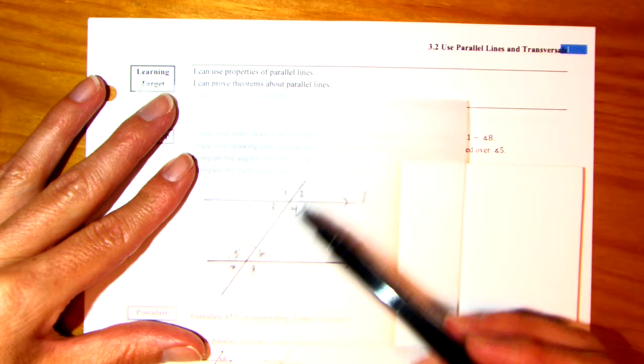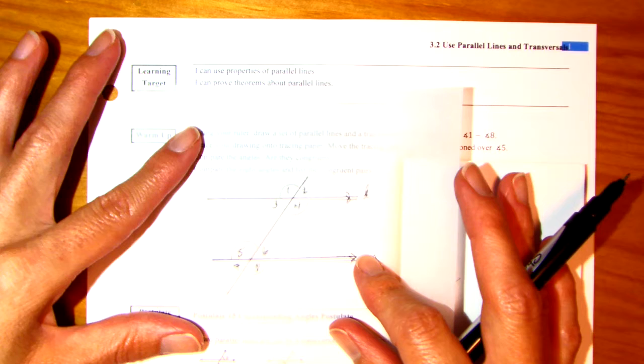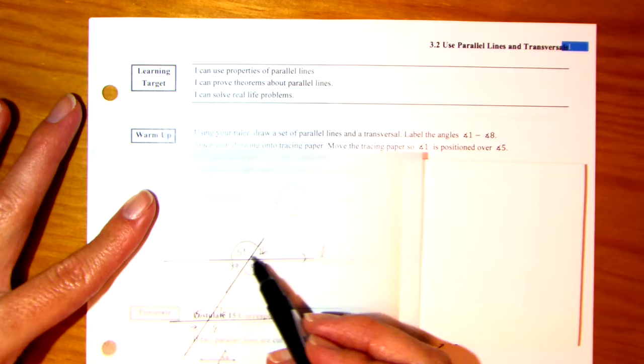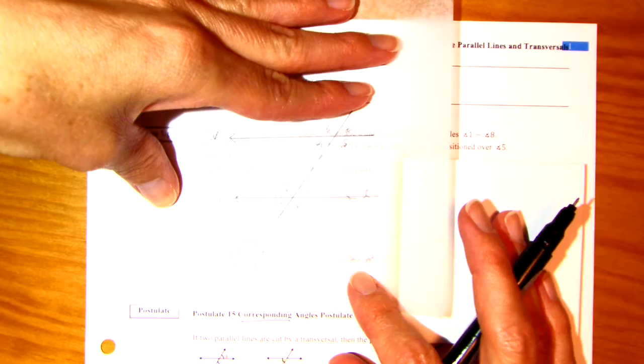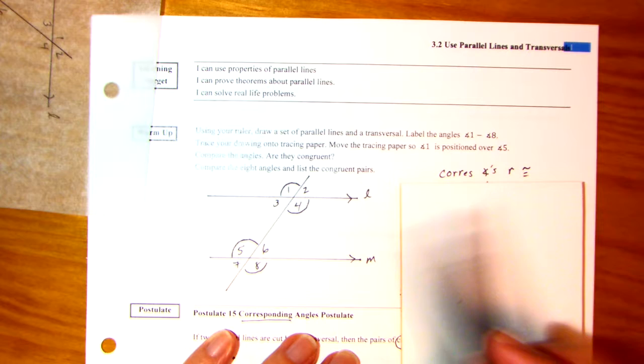The word about tracing paper is I used a Sharpie. And tracing paper works best with Sharpie or pencil, not a pen. Now move the tracing paper so that angle 1 is positioned over angle 5. So I'm going to take this tracing paper and slide it down. And what do you notice? 1 and 5 are the exact same angle. And then I'm also going to turn it around. 1 and 4 are the same angle. 1 and 8 are the same angle. So that's why I put the arcs there. These angles are always going to be congruent. Let's see why.